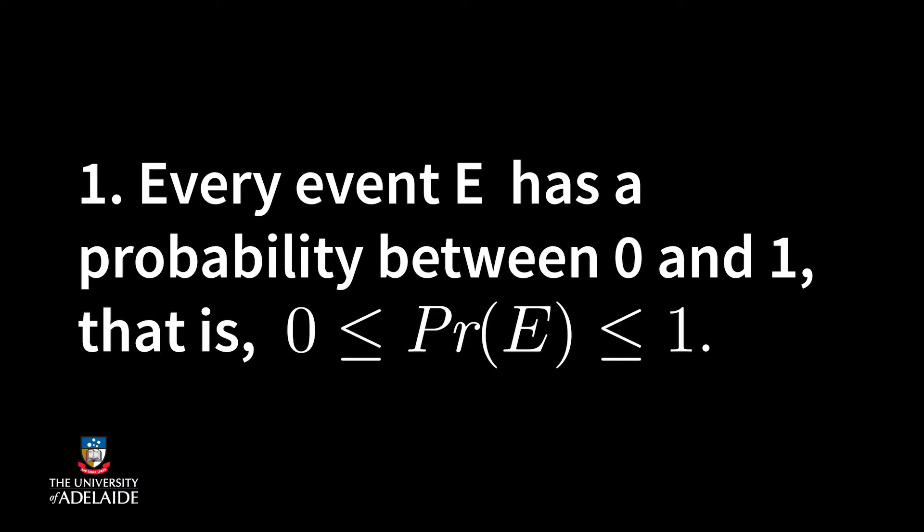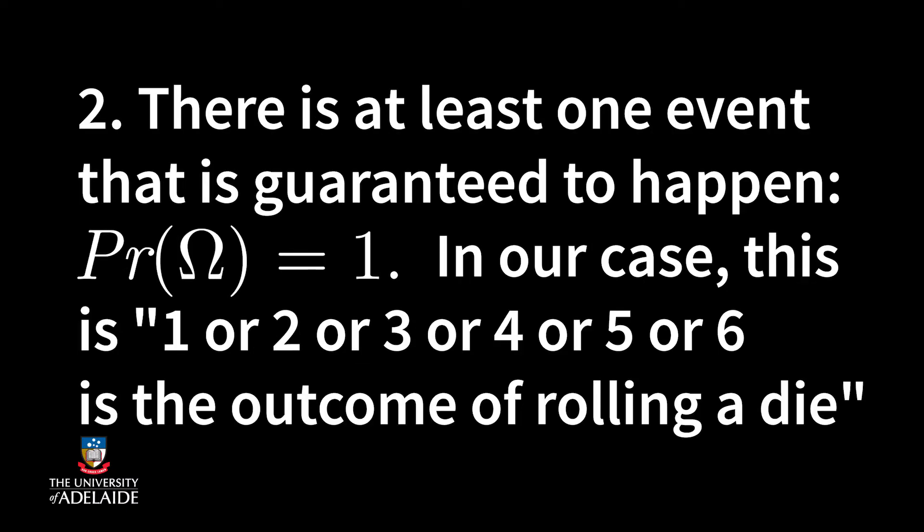There are three underlying assumptions, also called probability axioms. 1. Every event E has a probability between 0 and 1. 2. There is at least one event that is guaranteed to happen. That is, the probability of the event consisting of all allowable events is 1. In our case, this is: 1 or 2 or 3 or 4 or 5 or 6 is the outcome of rolling a die.